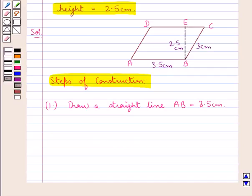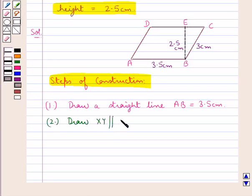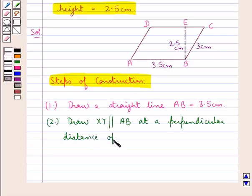Now, as we know that in a parallelogram opposite sides are parallel, AB would be parallel to CD, and CD is at a perpendicular distance of 2.5 cm from AB. In the next step we would draw XY parallel to AB at a perpendicular distance of 2.5 cm.